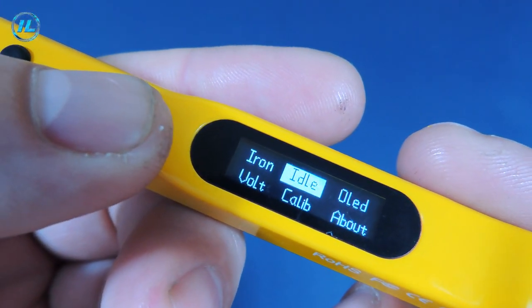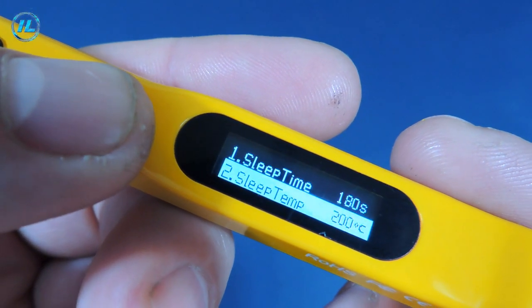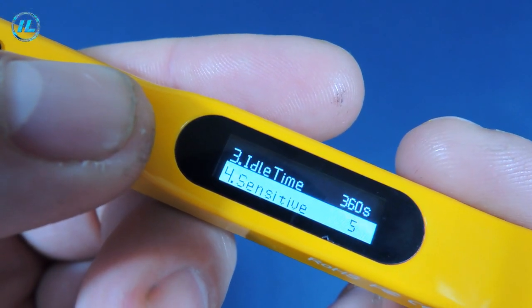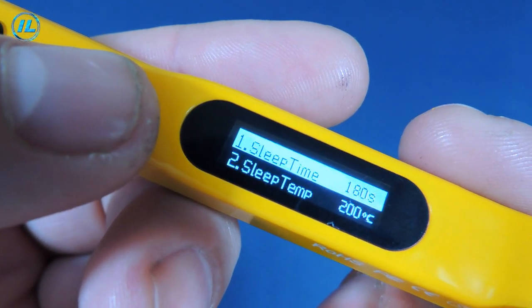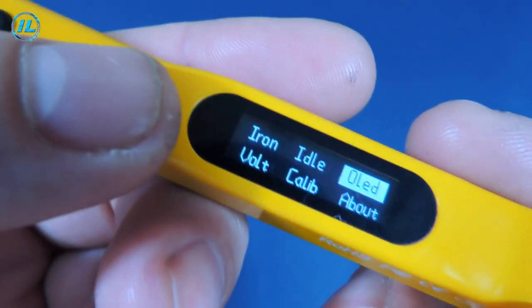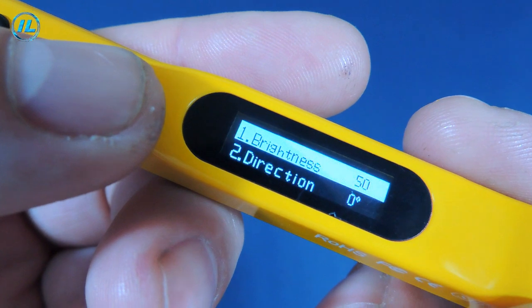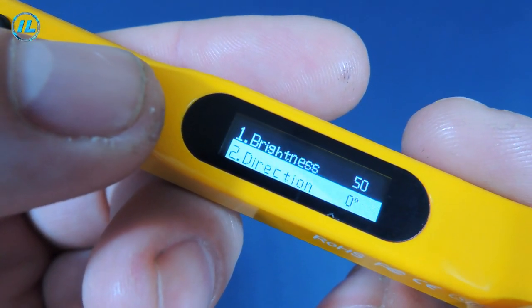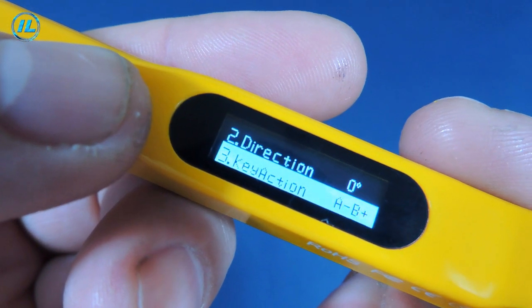Next item. The time of transition to sleep mode, the temperature in sleep mode, sensitivity, enabling or disabling the screen in sleep mode. Next, the screen settings: brightness, screen rotation by 180 degrees and changing the assignment of buttons among themselves.